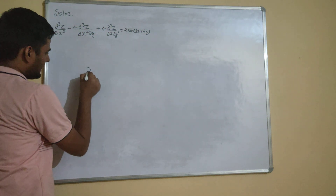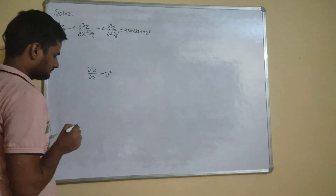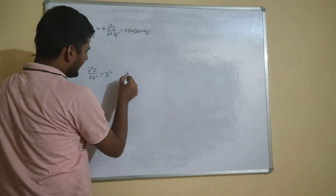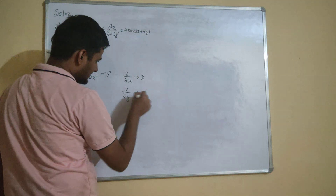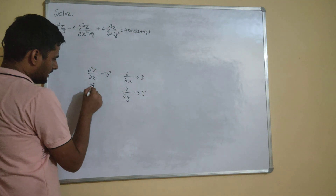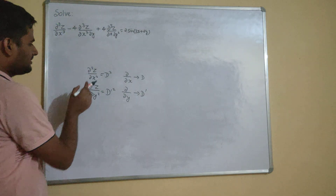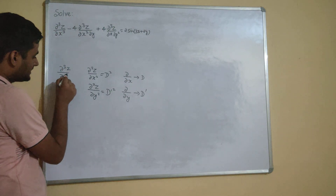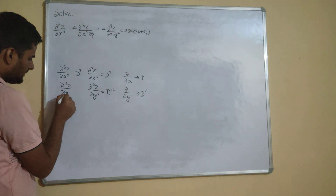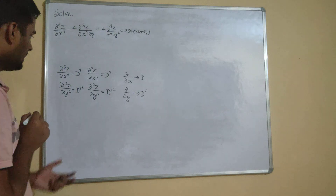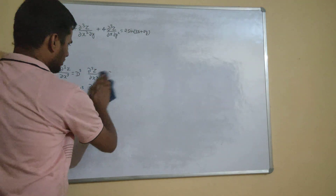Whenever you see del²Z/delX², we write this as D². Whenever you see del/delY, you write D dash. Same here also — del²Z/delY² you write as D dash². So we have to use this notation and write the given question in D and D dash format.